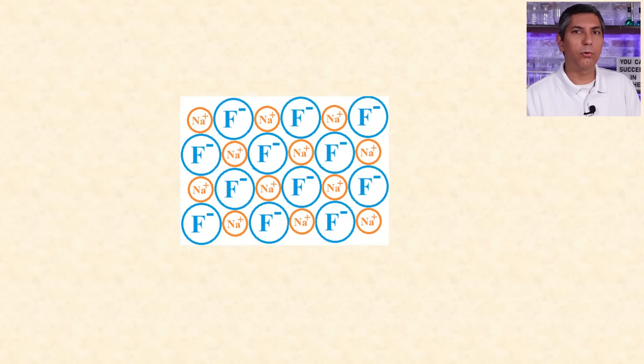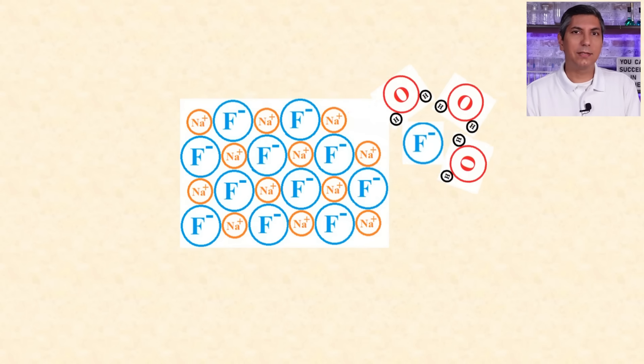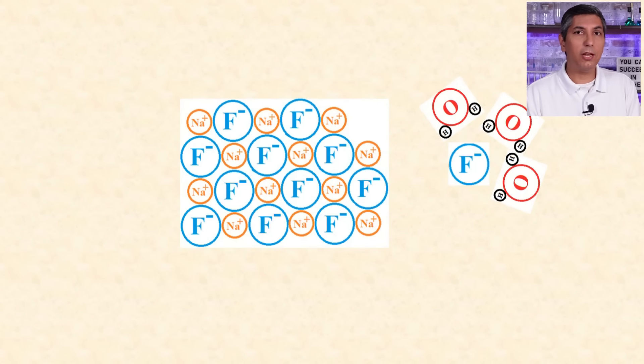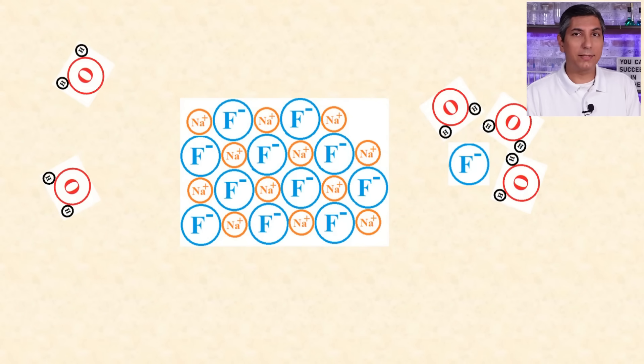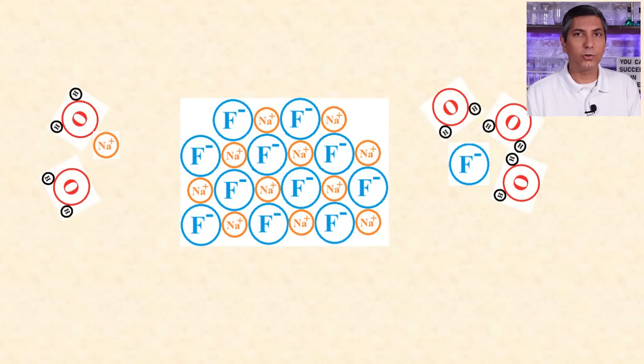Another force can exist between polar molecules like water and ions in an ionic compound. This is called an ion-dipole force. In this example, the positive pole of water surrounds a negative ion like fluoride and literally drags it into solution. The negative pole of water surrounds positive ions like sodium and does the same thing. If the ion-dipole force is stronger than the ionic forces holding the compound together, the compound will dissolve in water quite easily.